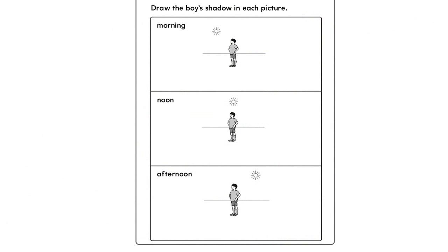Give each student a copy of Activity Sheet 10. Have students look at the three pictures. Have students draw the boy's shadow in each picture.